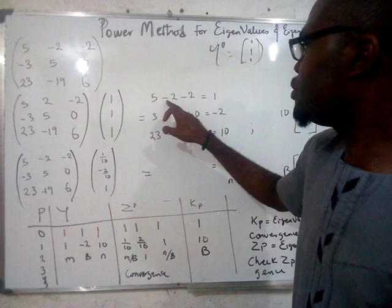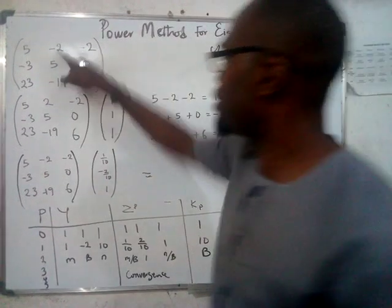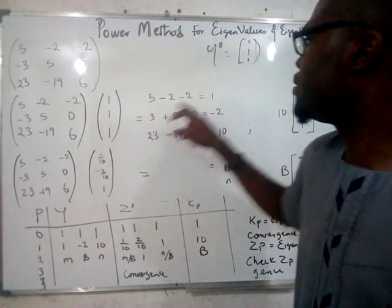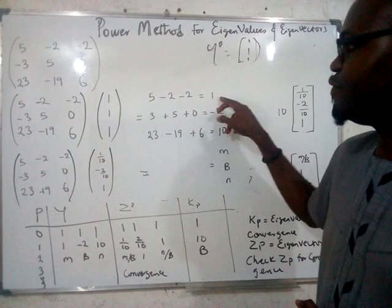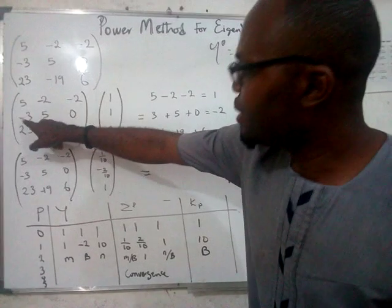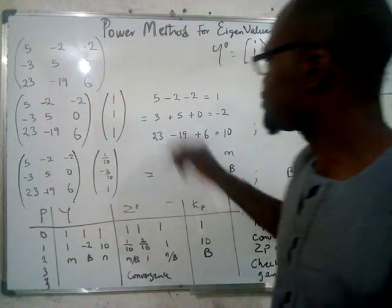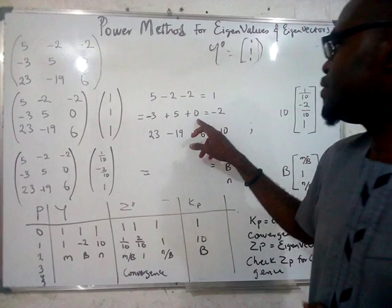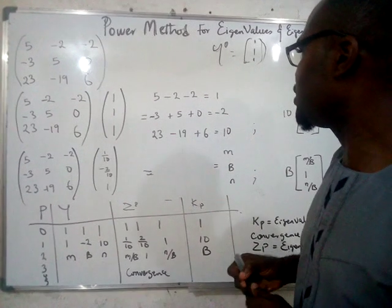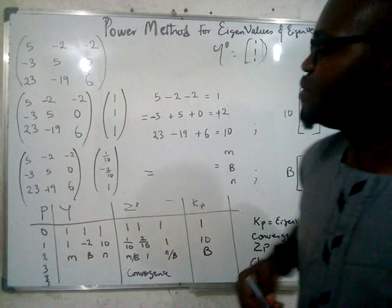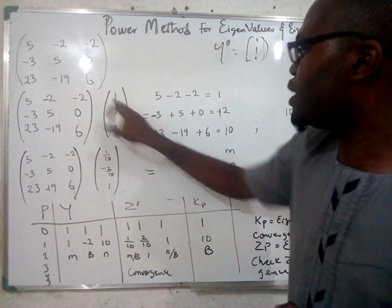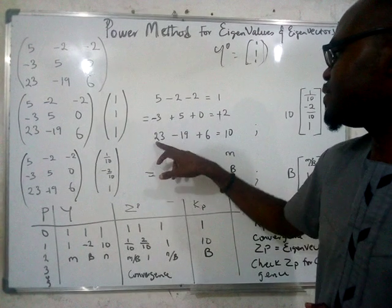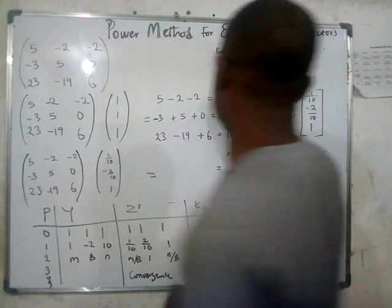Then multiply out normally. You have five times one equals five, minus two times one equals minus two. Then minus two times one equals minus two, so you solve out: five minus one minus two gives you one. For the second row, minus three times one equals minus three. Five times one equals five, zero times zero equals zero. We have minus three plus five which gives us plus two. For the last row, 23 times one equals 23, minus 19 times one equals minus 19, six times one equals six. You sum out 23 minus 19 plus six equals ten.